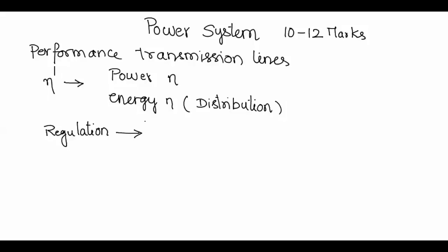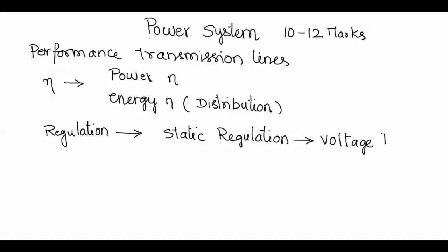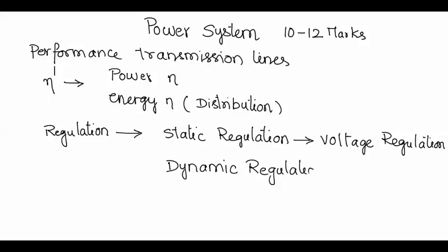Coming to regulation, we have two types: static regulation and dynamic regulation. Static regulation — also called voltage regulation — is calculated for equipment that gives electrical output, such as transmission lines, alternators, and generators. Dynamic regulation is calculated for systems that give mechanical energy as output, that is, for motors.